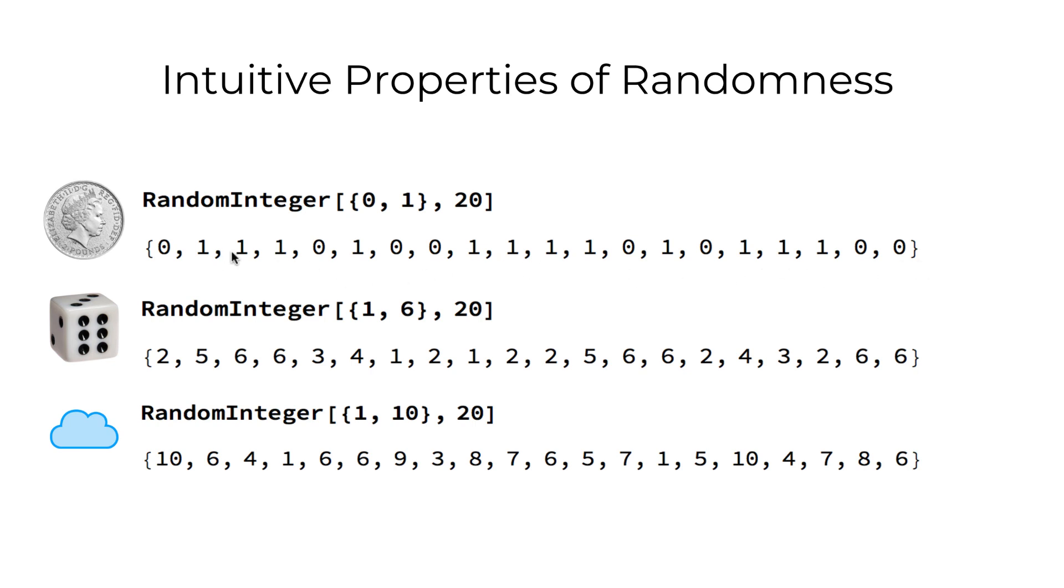Likewise, throwing a dice can be encoded with an alphabet of 6 symbols, in this case numbers.